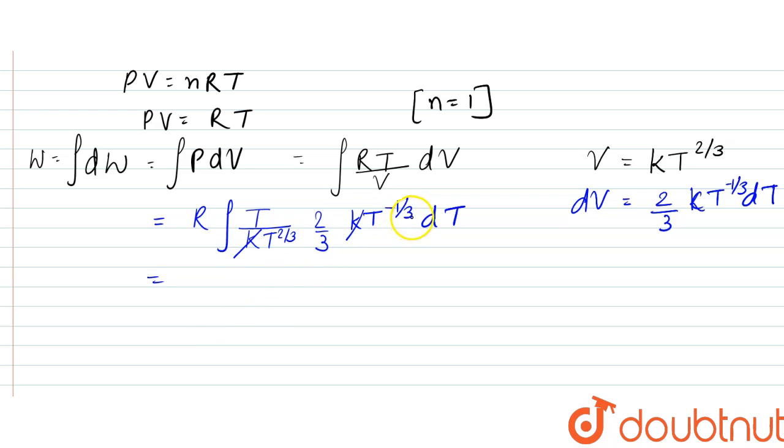So it becomes T over T. From here, this becomes 2R/3 when factored. This T will get cancelled, so we have the integration of dT only. From here, we can write 2R/3 times T2 minus T1.